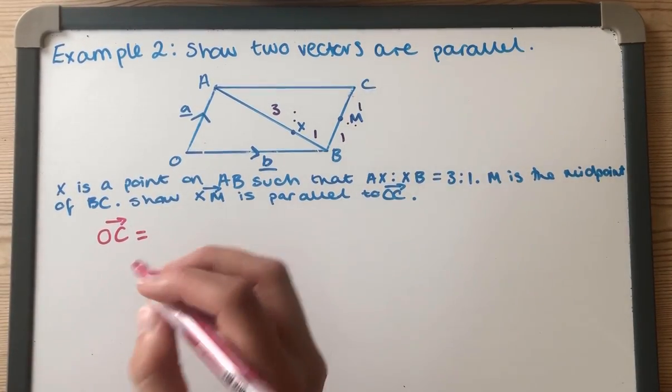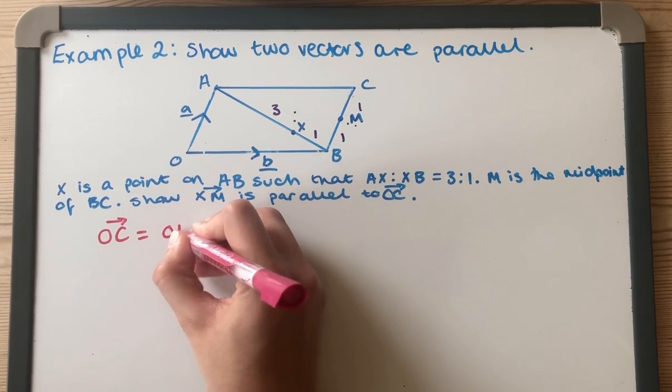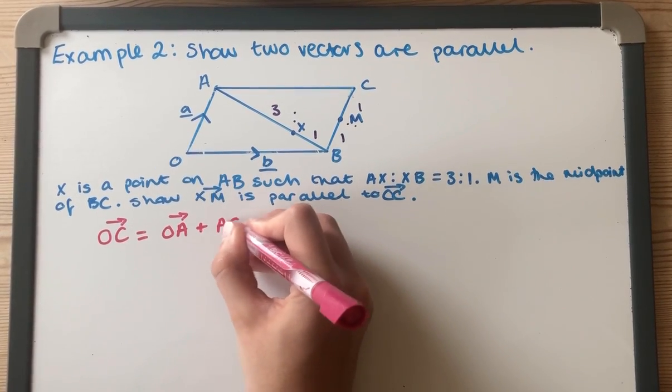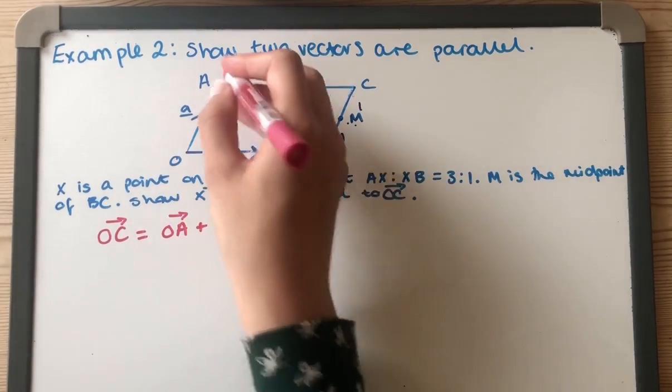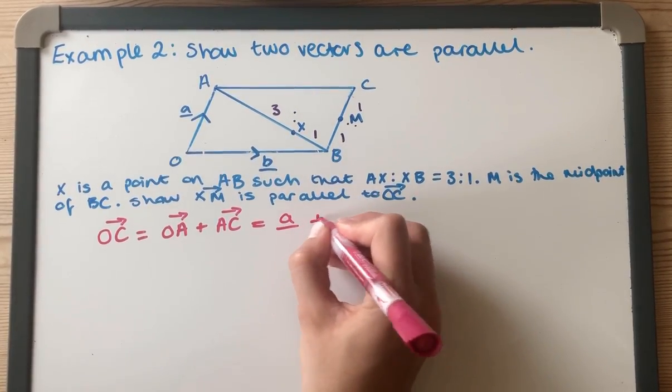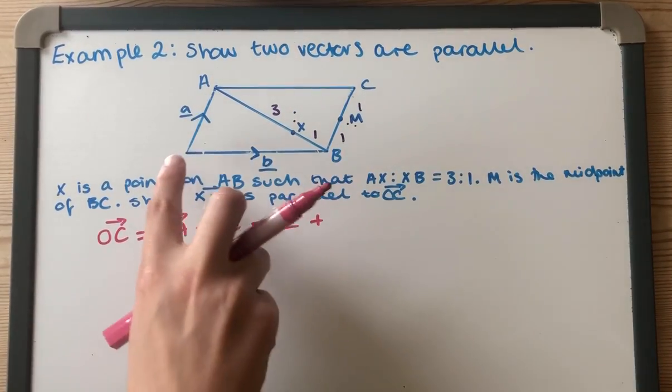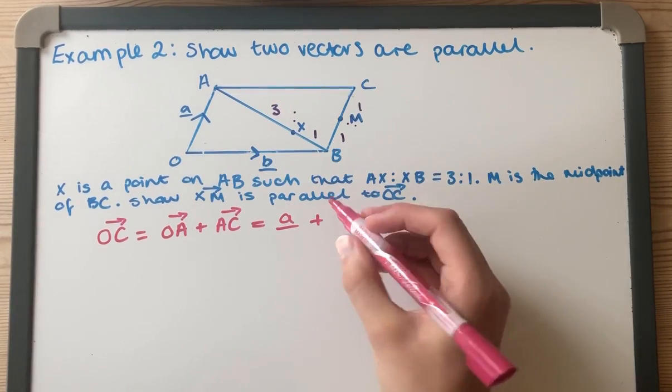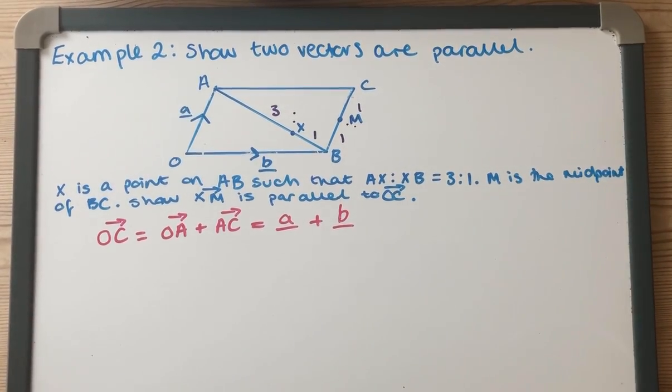Just to note, this is a parallelogram - it isn't stated in the question but it is, so that's quite important. I'm going to go O to A and then A to C. O to A is A, and A to C, because it's a parallelogram, that side is exactly the same as that, so that is B. So OC is very simply A plus B.